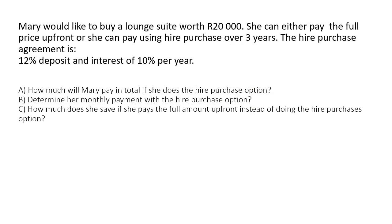Mary would like to buy a lounge suite worth 20,000 rand. She can either pay the full price or she can pay using a hire purchase over three years. If you do the full price, then you will only pay 20,000 rand — that is the cheapest way. But it's difficult for a lot of people to pay 20,000 rand at once, so the hire purchase is better because you can pay it off every month, though you will end up paying more than 20,000 rand. The hire purchase agreement will be a 12% deposit and interest of 10% per year.